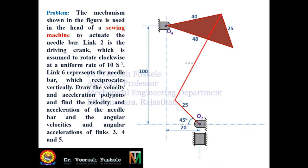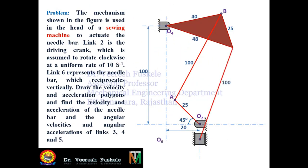Draw the velocity and acceleration polygons and find the velocity and acceleration of the needle bar, and the angular velocity and angular accelerations of links 3, 4, and 5.